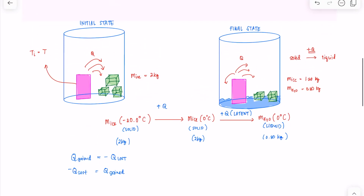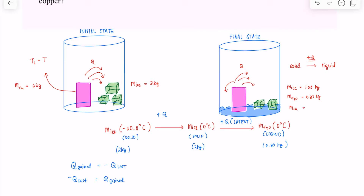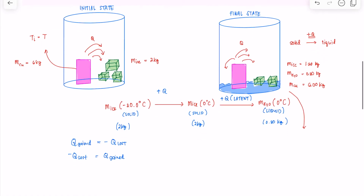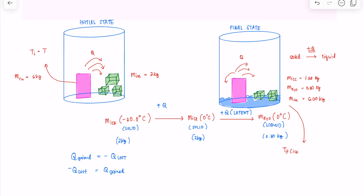To simplify, let's note the quantities we know. The mass of the copper is 6 kilograms. The mass of the ice is 2 kilograms. The mass of the copper did not change — still 6 kilograms. After thermal equilibrium, the final temperature of the ice, water, and copper are all equal. That final temperature is 0 degrees Celsius.